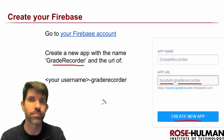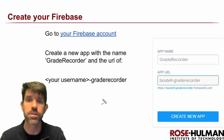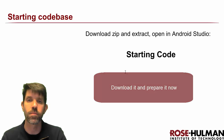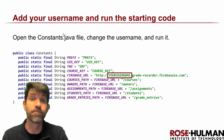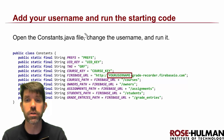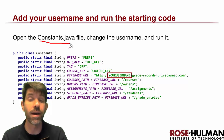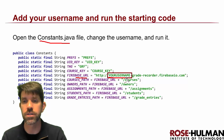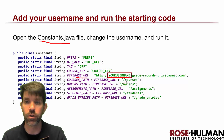Once you've done that, go ahead and download the starting code. There are a few things you'll need to do before you can run it. The first is to change the Firebase URL to point to your own. This is found in constants.java — you'll see several constants there, and where it says 'your username,' go ahead and change that to your own.